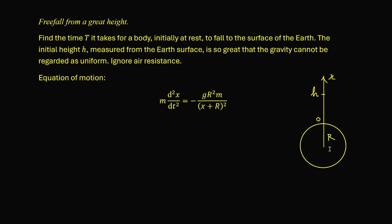Let's go. This is our diagram. The coordinate axis x points vertically upward. The origin is set at the surface of the Earth, not the center. And h is the initial height, and r is the Earth's radius. According to Newton's second law, mass times acceleration is equal to the force — in this case the force is just gravity.